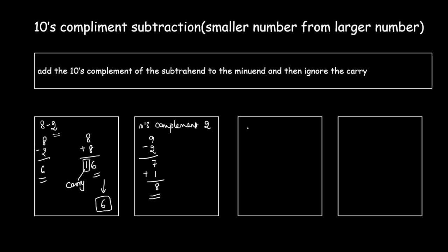Let's try a two-digit example: 25 minus 12. In regular subtraction, 5 minus 2 is 3 and 2 minus 1 is 1, so the answer is 13.